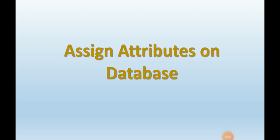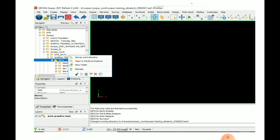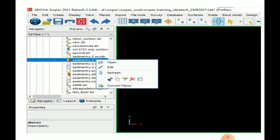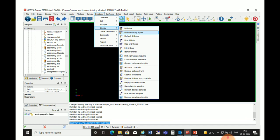Hello my dear friends, today we will try to learn how to assign attributes on our database. The first step, as always, we have to set our work directory. For that we will right-click on our folder which we want to set as our work directory and select the first option: set as work directory.